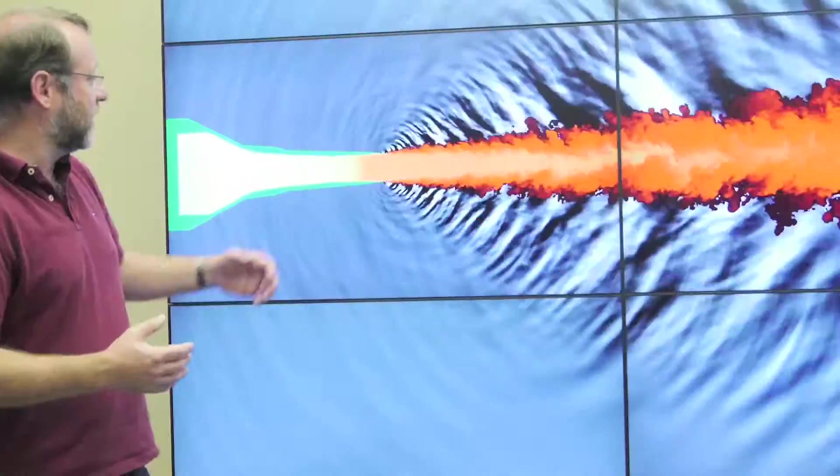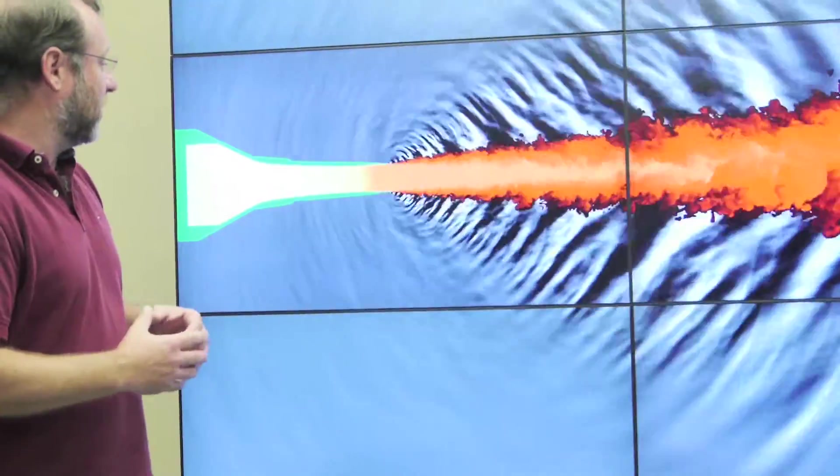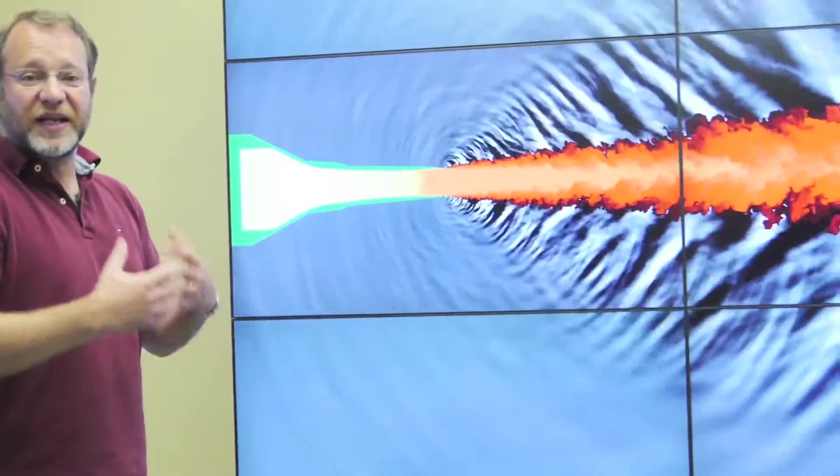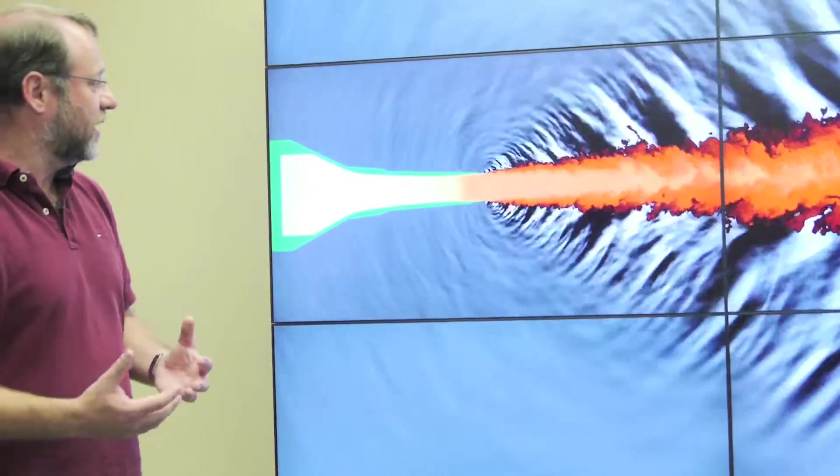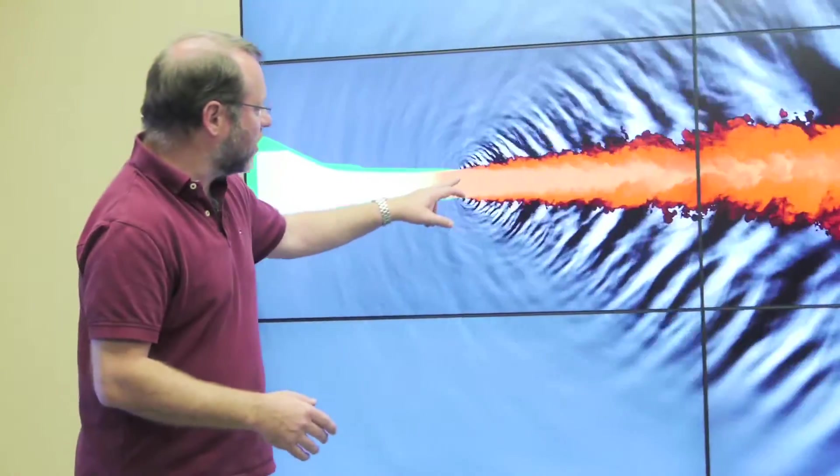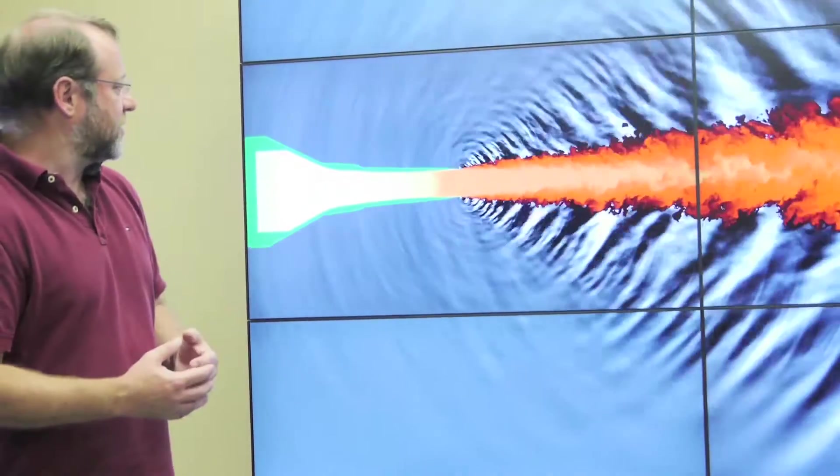Some of you may have seen the Chevron patterns on a jet engine. That's a passive device. Nothing is moving there. But by shaping this nozzle, you can avoid certain noise generating structures.